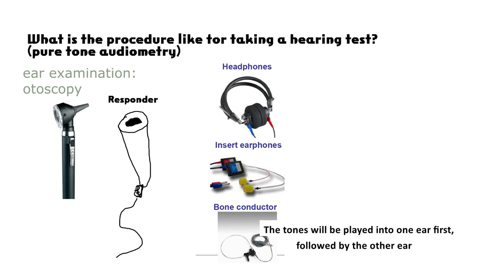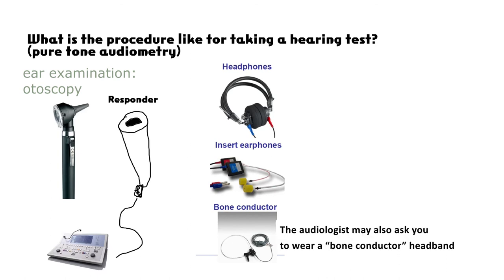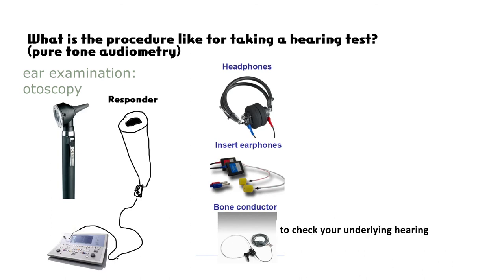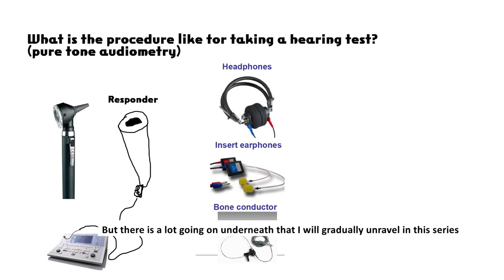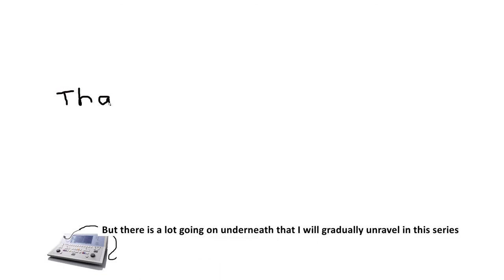The tones will be played into one ear first, followed by the other ear. The audiologist may also ask you to wear a bone conductor headband to check your underlying hearing, which bypasses the ear and directly tests the hearing organ. It is a fairly straightforward process for patients, but there is a lot going on underneath that I will gradually unravel in this series.